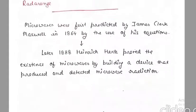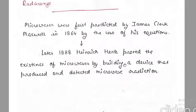To summarize: microwaves were first predicted by James Clark Maxwell in 1864 through his equations. Then in 1888, Heinrich Hertz proved that microwaves exist by building a device to produce and detect them. After that, Percy Spencer investigated the heating property of microwaves leading to the microwave oven.